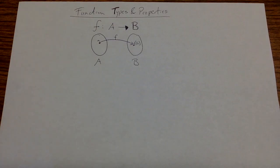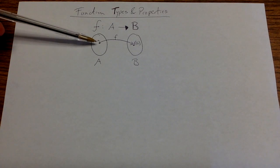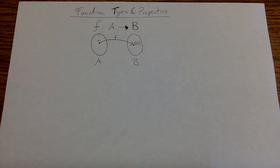So all I know about the function is that for every single thing on the left, I have exactly one arrow going to the right. And so I'm going to talk about the different types of functions by thinking about what happens with these arrows.